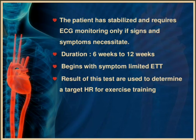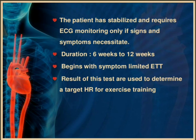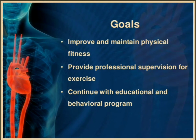Phase 3: the patient has stabilized and requires ECG monitoring only if signs and symptoms necessitate. Duration 6 weeks to 12 weeks, begins with a symptom-limited exercise tolerance test; results are used to determine a target heart rate for exercise training. Goals include improving and maintaining physical fitness, providing professional supervision for exercise, and continuing education and behavioral programs.